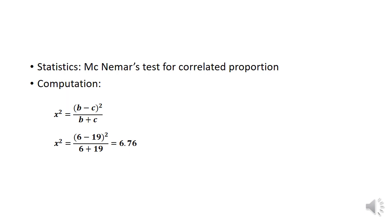For the computation, again we will be using chi-square equals b minus c squared divided by b plus c. Our value of b is 6 and c is 19. Chi-square equals 6 minus 19 squared divided by 6 plus 19, giving us 6.76. This is our computed value.